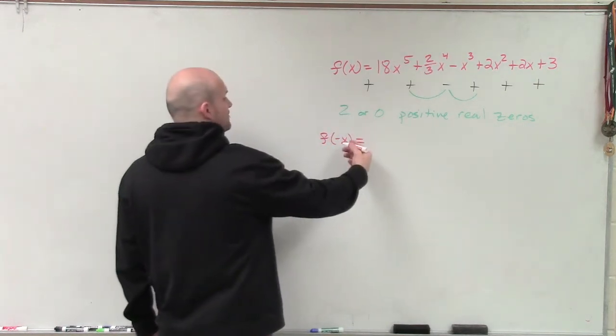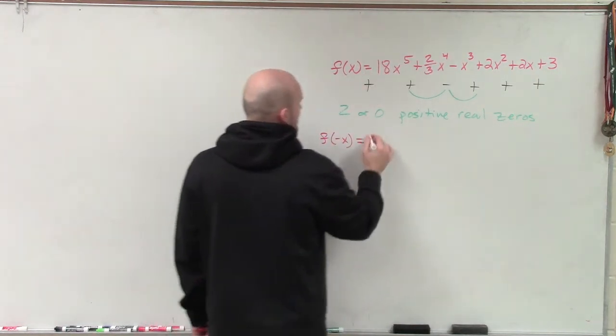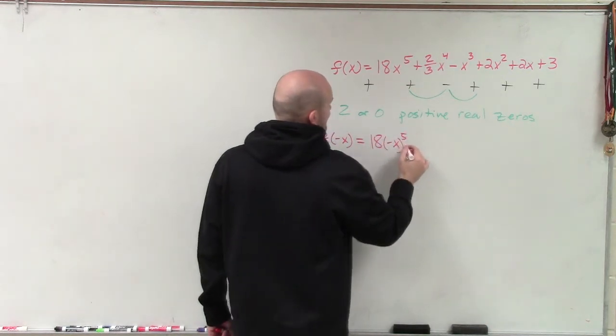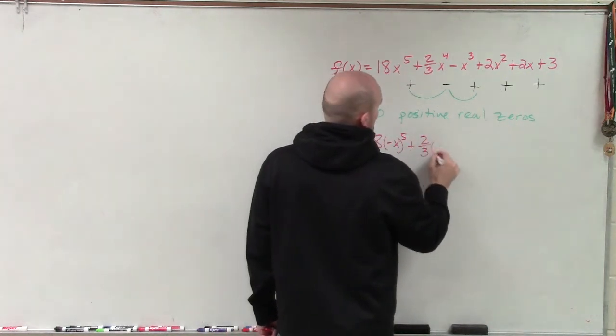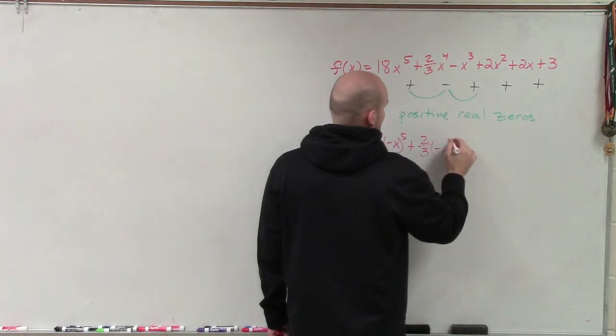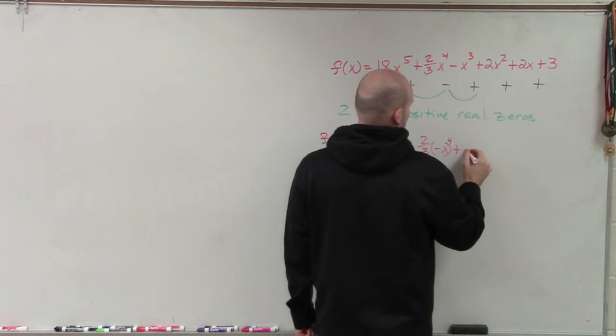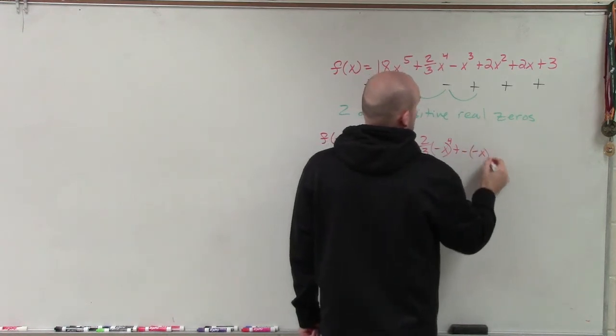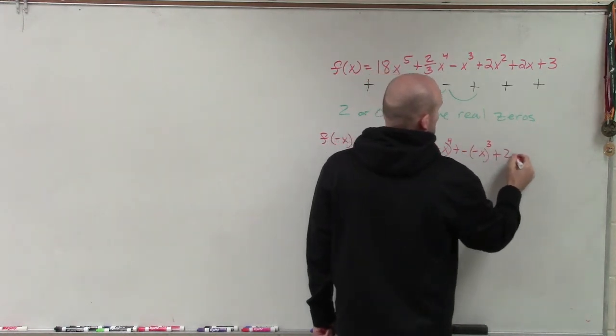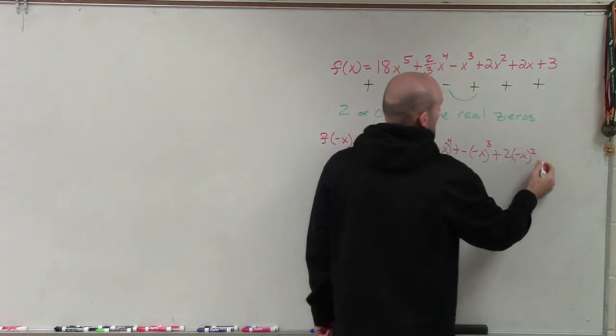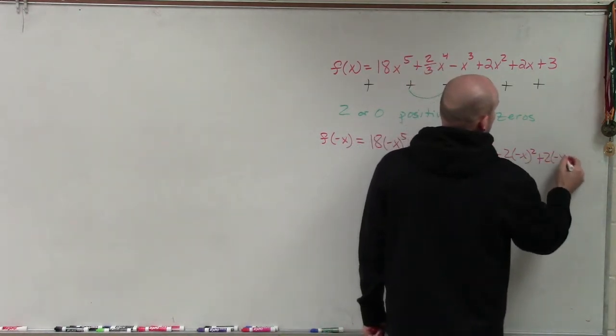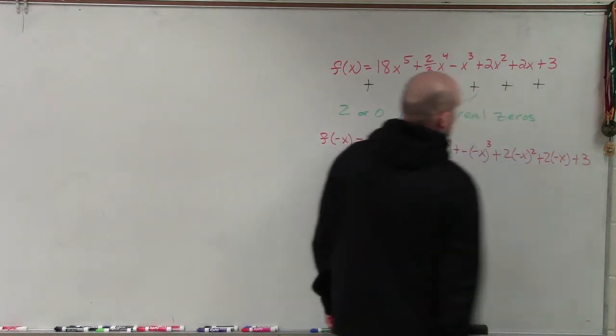So it's going to be negative x to the fifth, plus two-thirds times negative x to the fourth, minus negative x cubed, plus two times negative x squared, plus two times negative x, plus three.